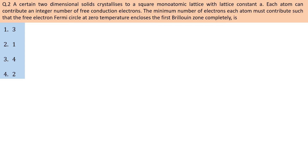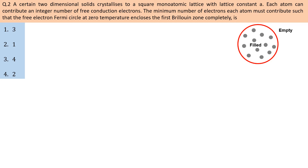In K-space or reciprocal space, the Fermi surface is a constant energy surface at E_F, where all states below are occupied by electrons and all states above are empty. In other words, the Fermi surface in K-space separates filled and empty states.